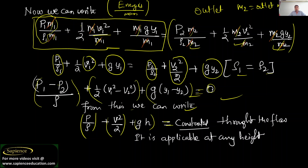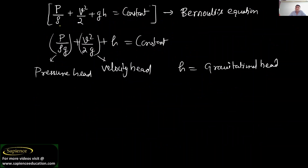We get the equation in the form of zero change because the sum of all energy changes is zero — meaning no change at all. So we can write: pressure energy plus kinetic energy plus potential energy is constant throughout the flow, applicable at any height. The equation p/rho + v²/2 + g·h equals constant is known as Bernoulli's equation.